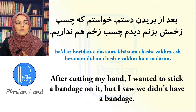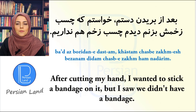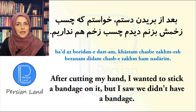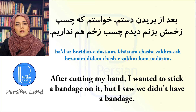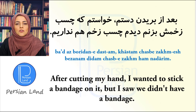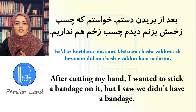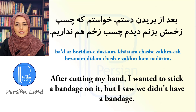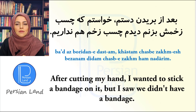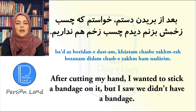بعد از بریدن دستم خواستم که چسب زخمش بزنم، دیدم چسب زخم هم نداریم. بریدن دستم means 'cutting my hand'. چسب زخم زدن means 'to put / to stick a bandage'. چسب زخمش — the ش refers to دست. هم means 'as well' — we didn't have a bandage either.